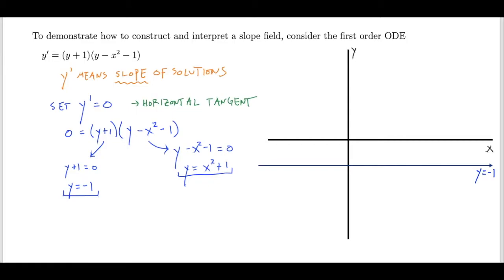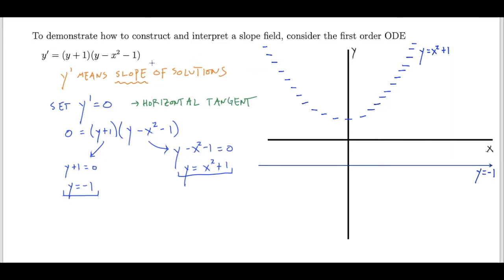Similarly, along the curve y equals x² + 1, solutions will also have horizontal tangents. However, I can't simply draw y equals x² + 1 because that curve itself doesn't have horizontal tangents. So I'll sketch the curve y equals x² + 1 to show its shape, and then along that curve I'll indicate that solutions should have horizontal tangents. These are the only two curves along which solutions have horizontal tangents.